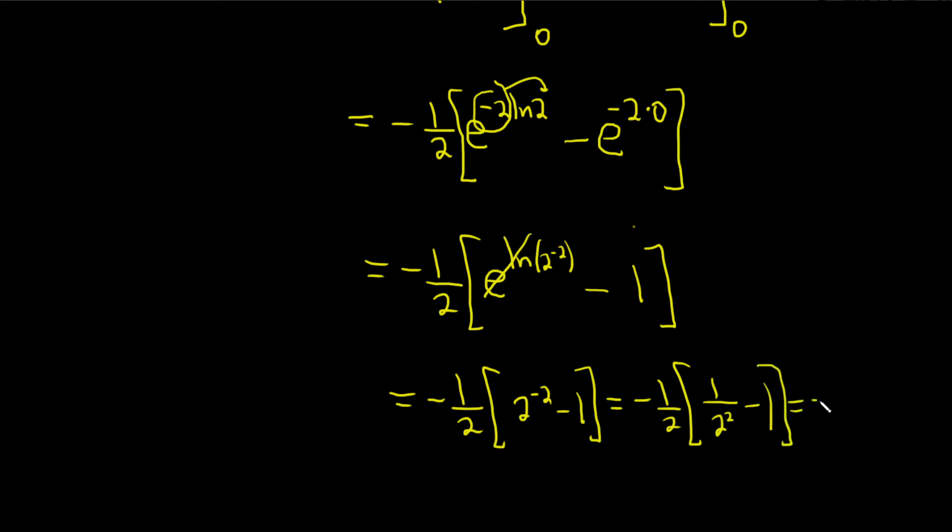This is equal to negative 1 half. This is 1 fourth minus 1. So this is negative 1 half. And then 1 fourth minus 1 is 1 fourth minus 4 fourths. It's really this, 1 fourth minus 4 fourths, which is negative 3 fourths.